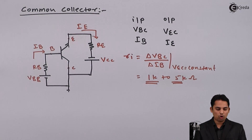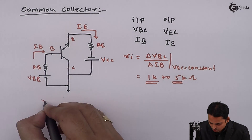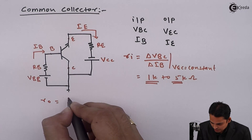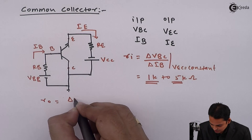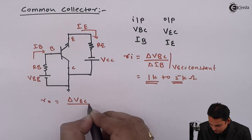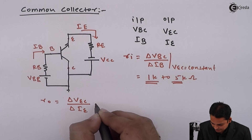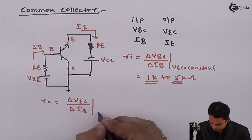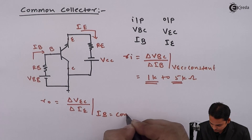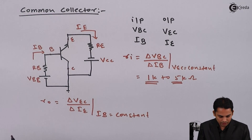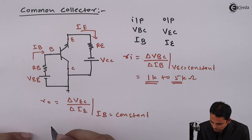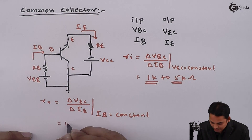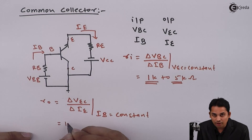The output impedance is defined as R0, which is equal to the change in output voltage delta VEC divided by the change in output current delta IE, keeping the input current constant. The value of R0 in the common collector amplifier is very low — in the range of 100 ohms.